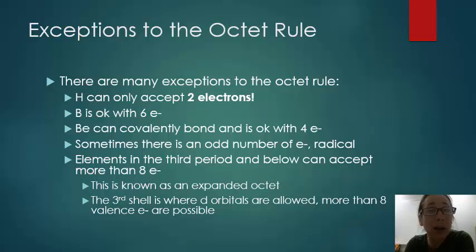Now there are a lot of exceptions to the octet rule. First, hydrogen can only accept two electrons. It can never have more than two electrons, so it will only form one bond. Boron is actually okay with six electrons. It doesn't need eight. Beryllium, even though it's an alkaline earth metal, can actually covalently bond, and it is okay with four electrons.